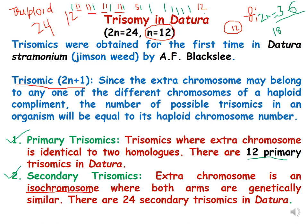Trisomics were obtained for the first time in Datura, which is called jimson weed, by A.F. Blakeslee. Datura has a somatic number of 24, so the gametic number is 12. The extra chromosome — 2n plus 1 — means one extra chromosome, which leads to formation of trisomics in Datura. So if the somatic number is 24, trisomics will have 25 chromosomes.